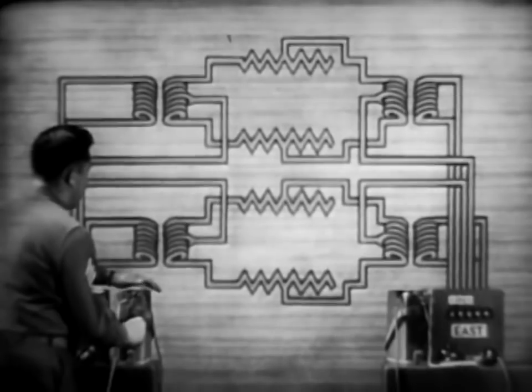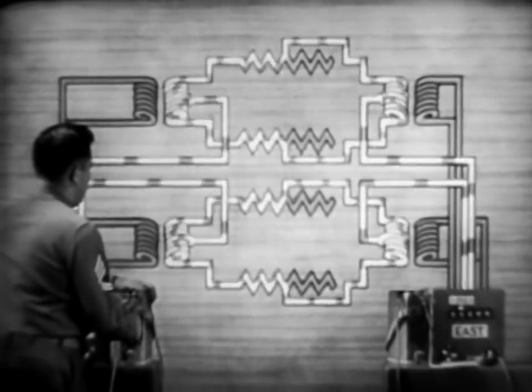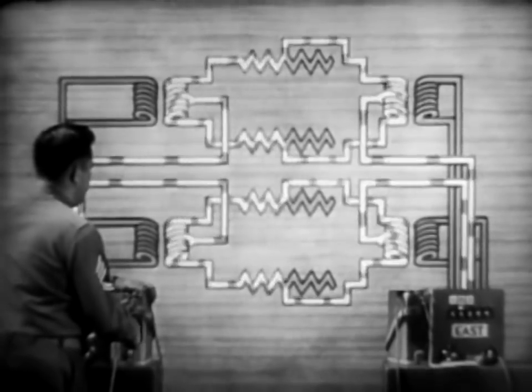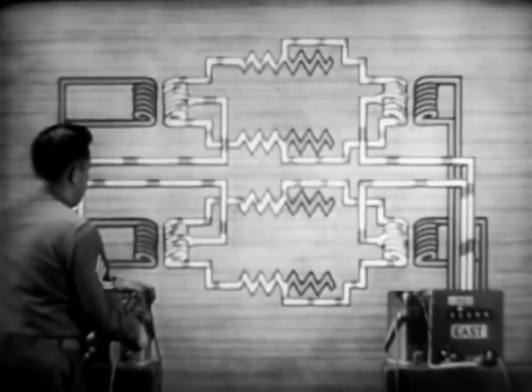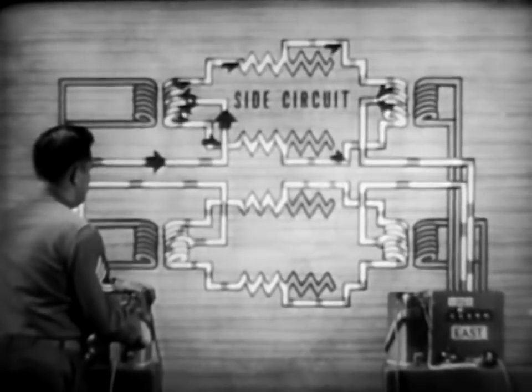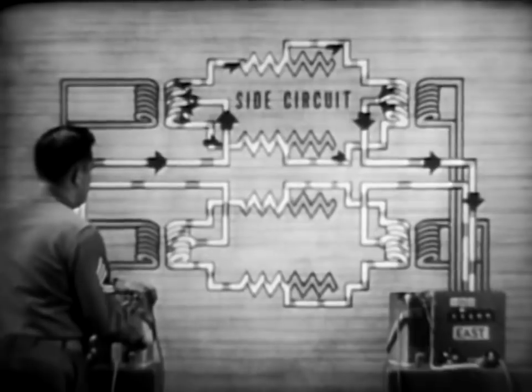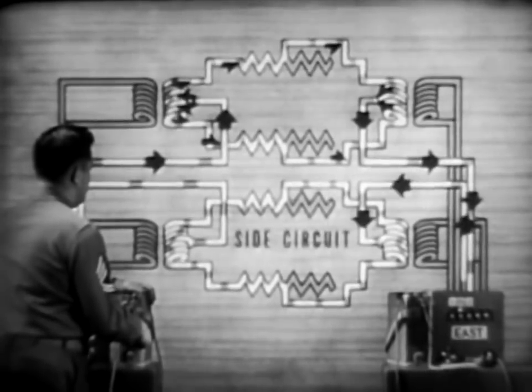Here's how it works. When the phantom is in use, the current divides in the repeating coils just as in a simplex circuit. The current travels through the line wires of the number one side circuit. Instead of returning through the earth, however, it uses the wires of the number two side circuit.